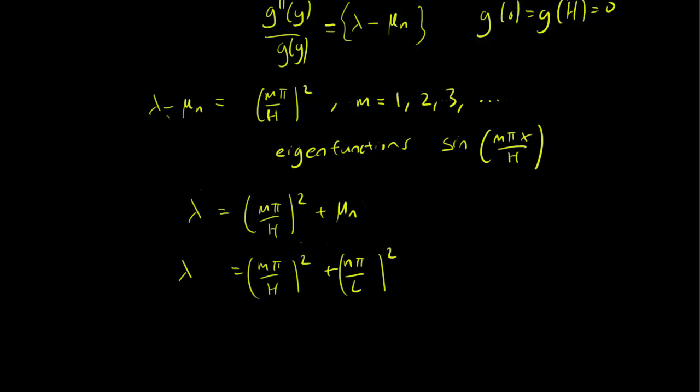and you may notice that lambda is not just indexed by an n, but it's indexed by two variables, m and n. So for each m, and for each n, you get one eigenvalue, and m goes from 1, 2, 3 to infinity, and n goes from 1, 2, 3 to infinity. So you have these lambda,